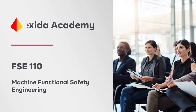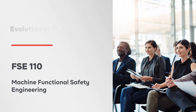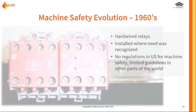If we look at the evolution of machine safety over time, starting in the 1960s, the technology was hardwired relays. They were installed where a specific need was recognized. So if there had been an accident in the past or there was an event that someone working on the system knew about, they may have put in a specific hardwired relay to stop a system if an e-stop was hit or if someone needed to stop it in an emergency.